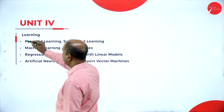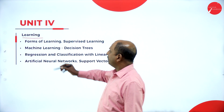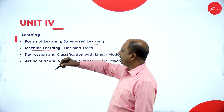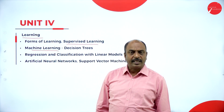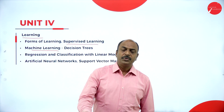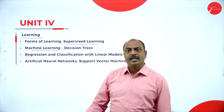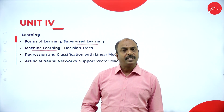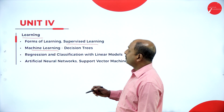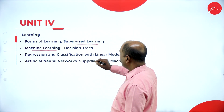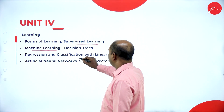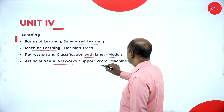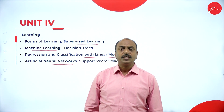In Unit 4, the topic is Learning — different forms of learning such as supervised learning and machine learning. Machine learning means the computer or system learns from given or previous data, analyzes it, and predicts results. We will cover machine learning, regression and classification with linear models, artificial neural networks, and support vector machines.